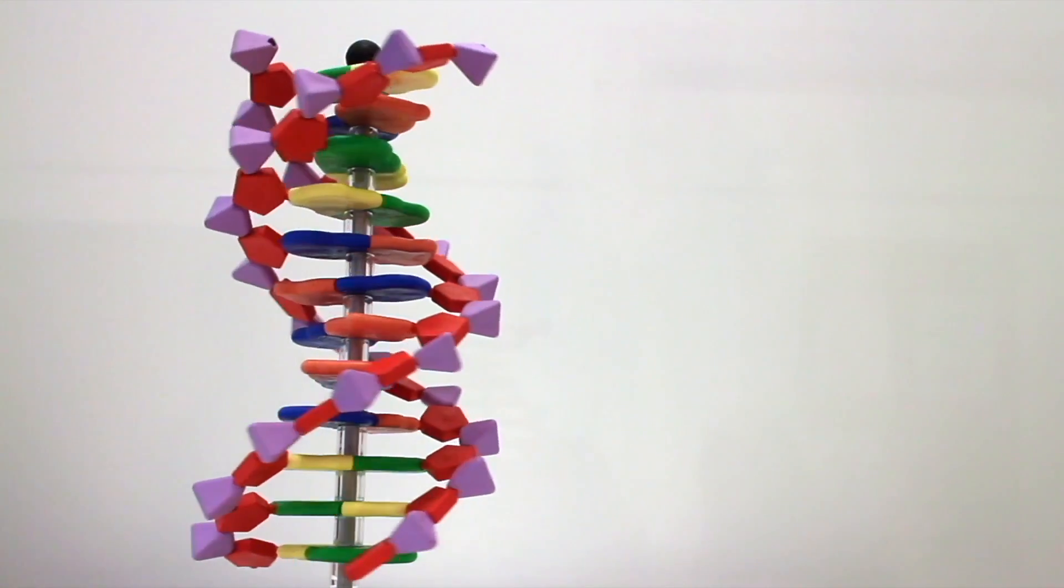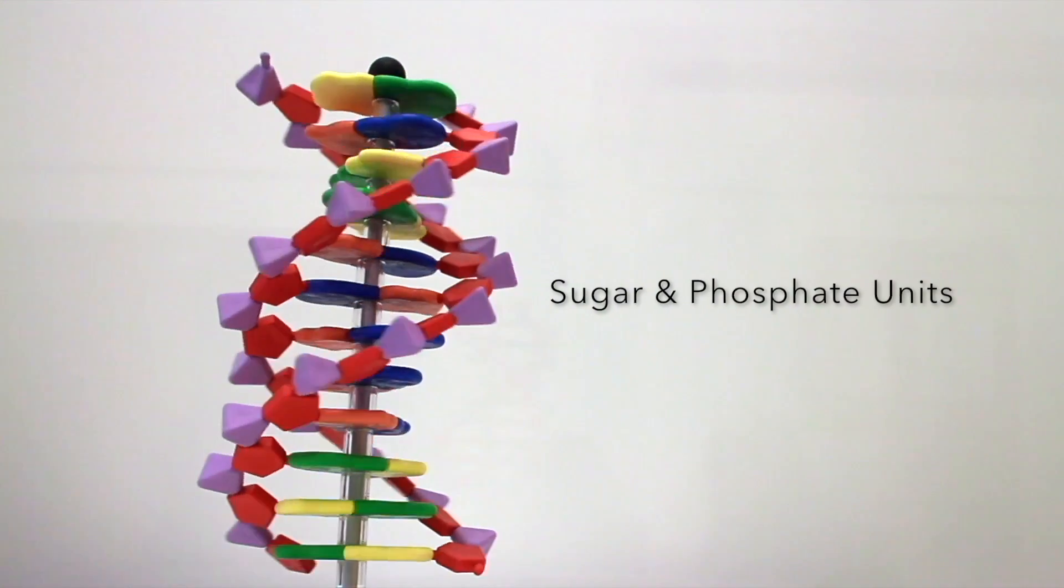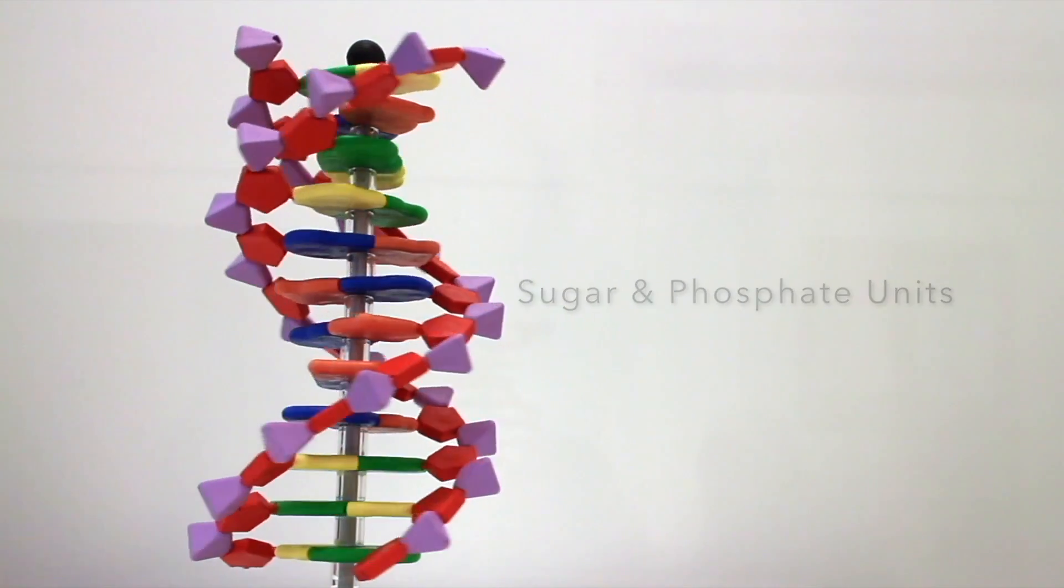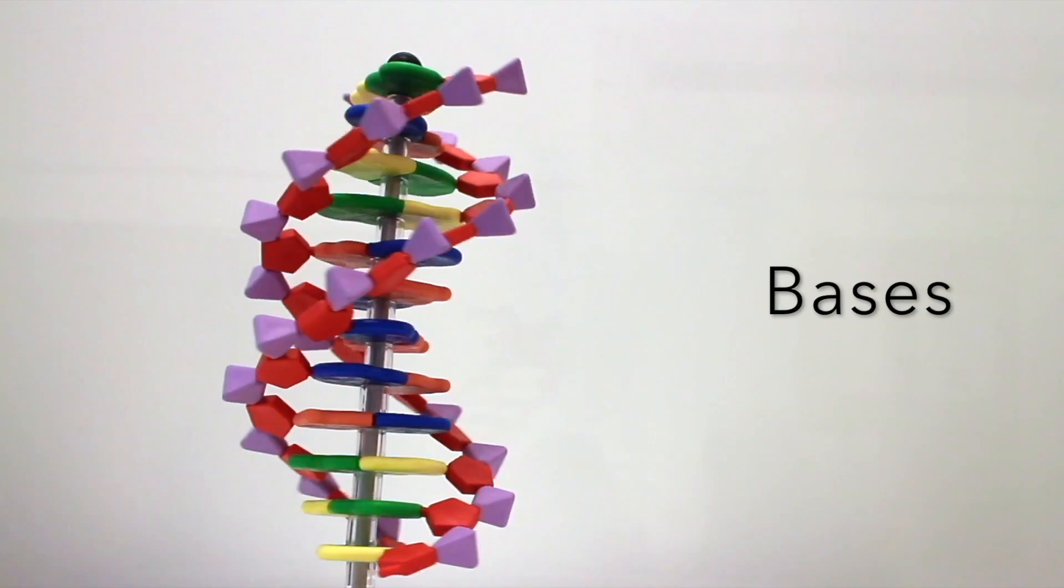Each spiral is made up of a backbone of alternating sugar and phosphate units. Each rung of the ladder is made up of two halves, called bases, linking the two backbone strands together.